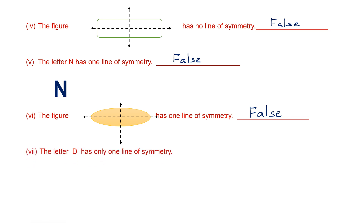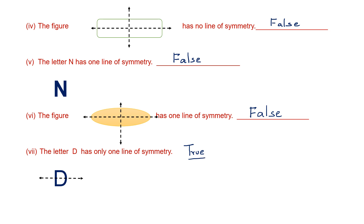Next one: the letter D has only one line of symmetry. Let's draw the letter D and see how many lines of symmetry we can have. We can have one line of symmetry. So the letter D has only one line of symmetry — this statement is true, because we can't draw any more lines of symmetry for the letter D.